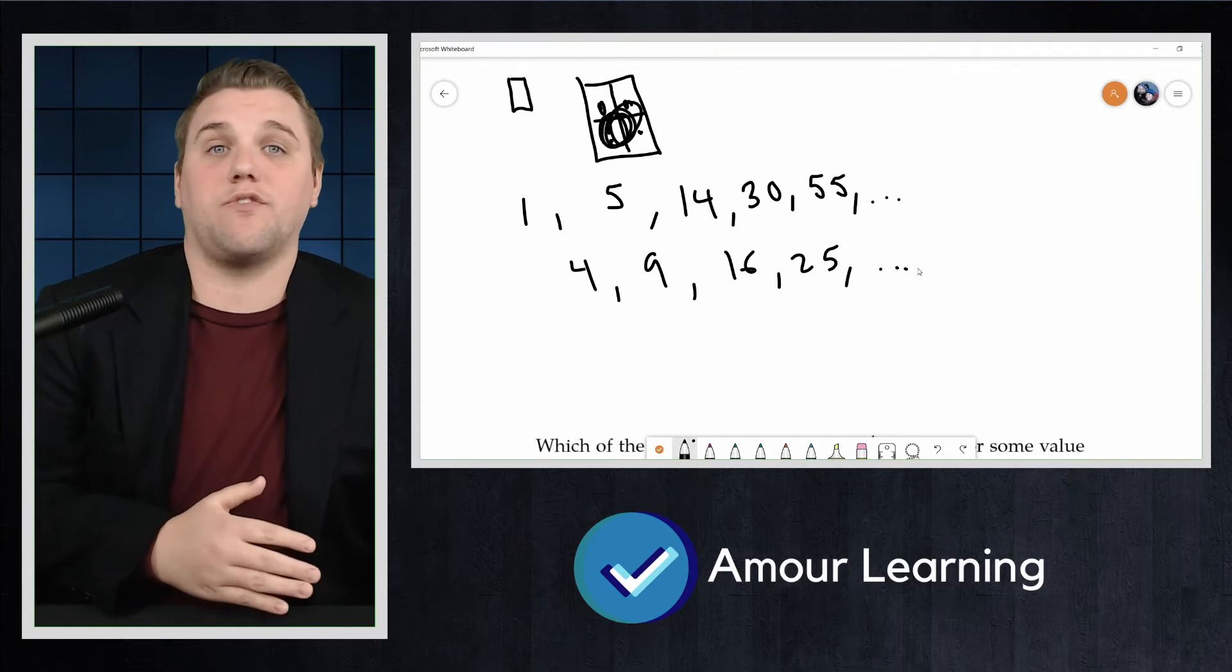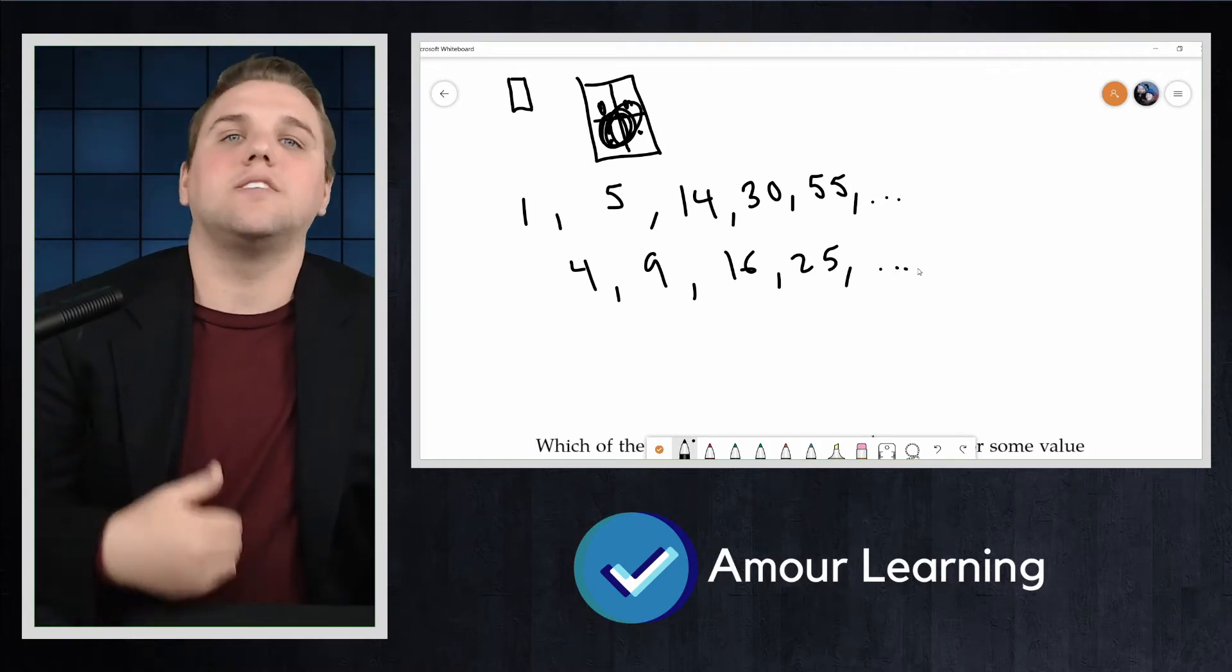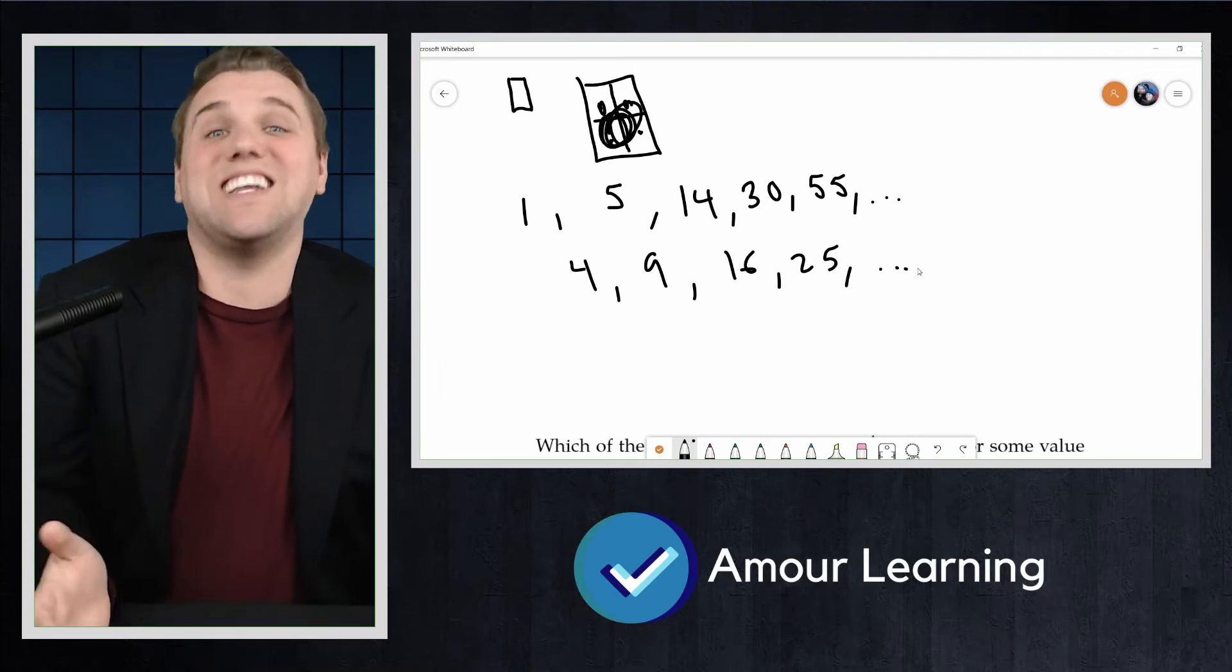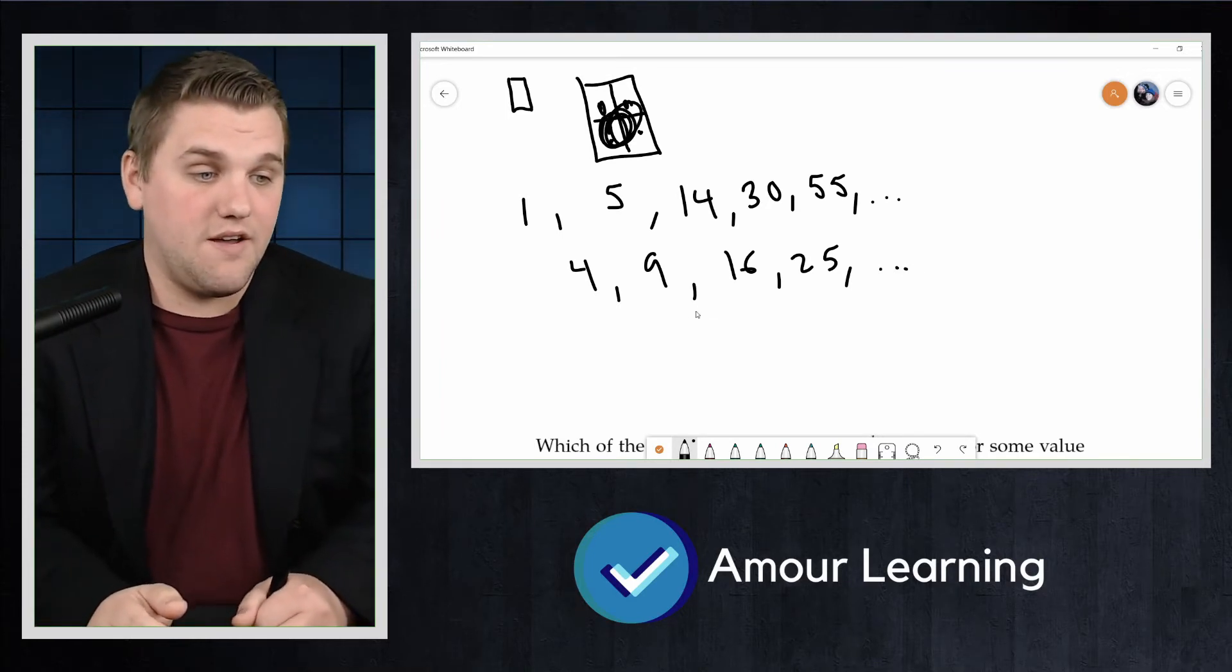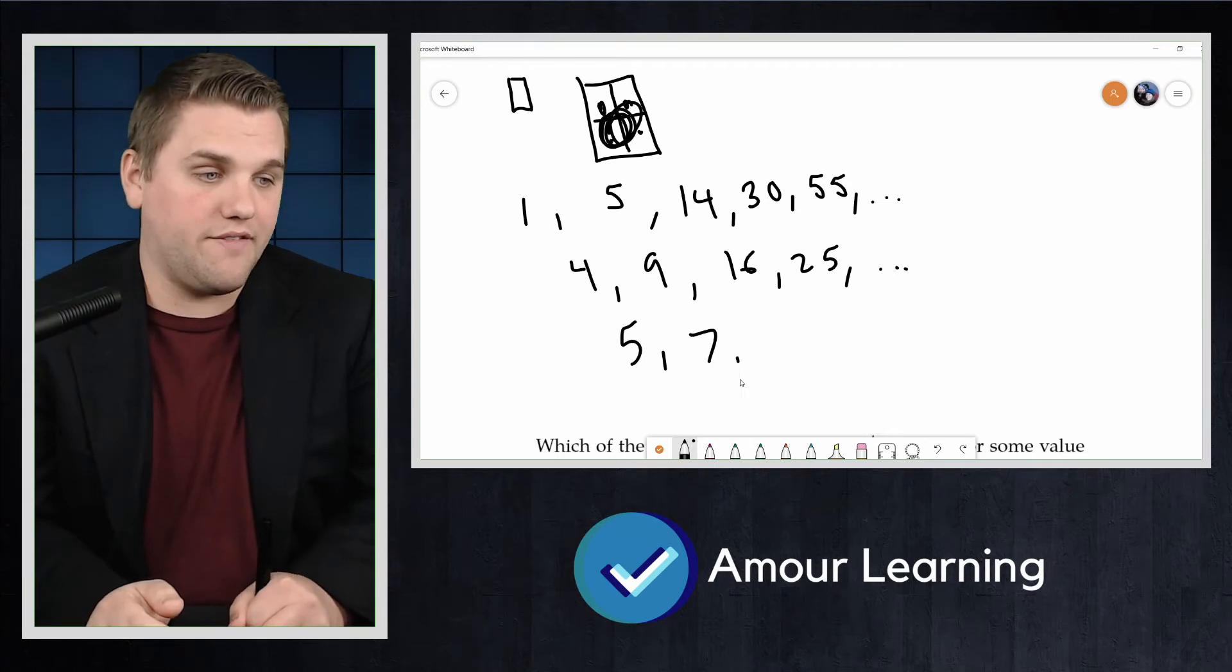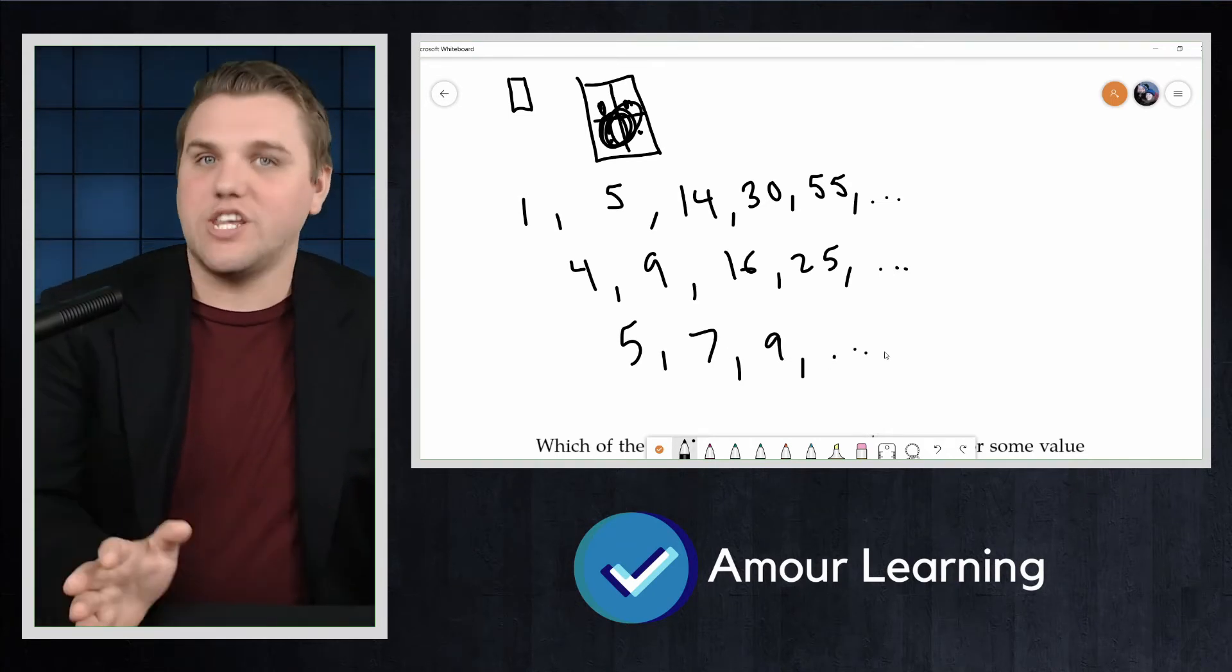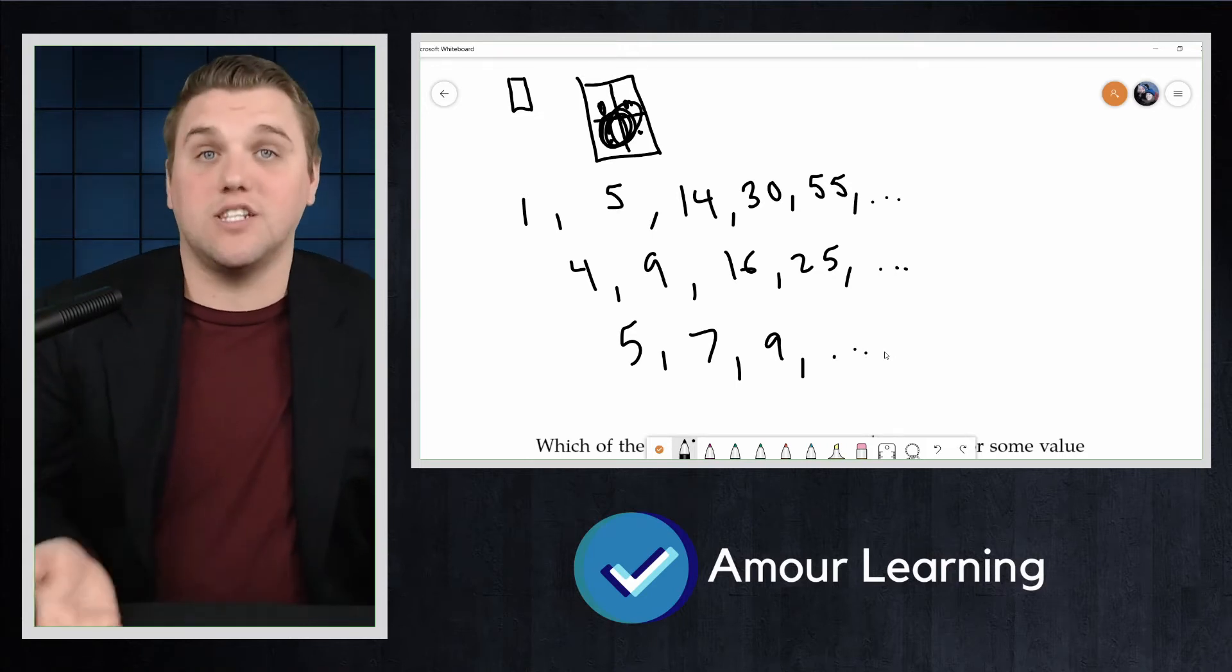Now, this sequence of differences is not arithmetic, since the sequence of differences is not constant. In fact, the sequence of second differences is 5, 7, 9, and so forth, which is an arithmetic sequence with constant difference 2.